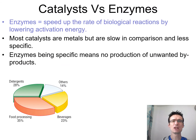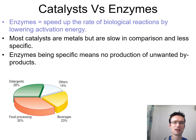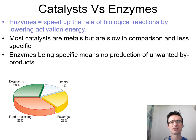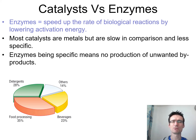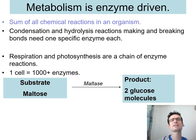Basically, we now use enzymes a lot in industry. About 28% of the enzyme industry is used in detergents, 35% in food processes, and 23% in beverages. Enzymes are used because they speed up the rate of reaction — the same as a catalyst. They might initially be a bit more expensive than a metal catalyst, but you can reuse them constantly, and they are more specific, which means you get fewer unwanted byproducts compared to a metal catalyst.